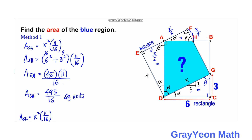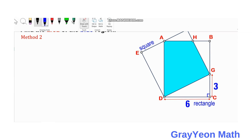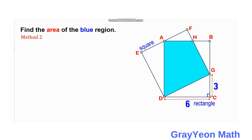For our second method, we subdivide the shaded region into two parts by drawing a line from point H to point D. We notice that these two regions are actually right triangles — because there is a 90-degree angle at A from the rectangle, and this is a 90-degree angle from the square — so these are two right triangles.